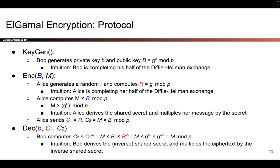What Bob is going to do is he's going to generate a private key by choosing a random number, lowercase b, and then he's going to generate the corresponding public key by computing g to the little b mod p, which we'll denote as capital B. So Bob has now generated a key pair. There's a private key that he keeps for himself and a public key that he publishes to the world. And you might notice that these are the exact same values he would have generated in the Diffie-Hellman key exchange.